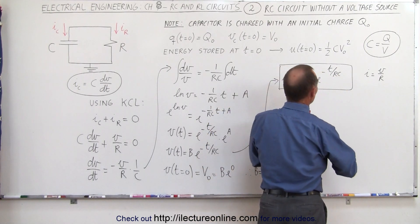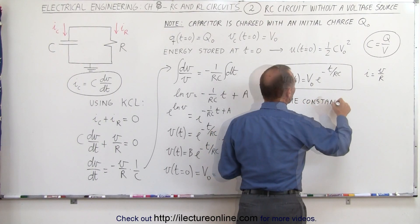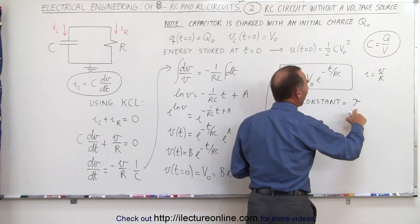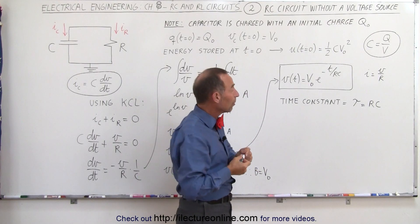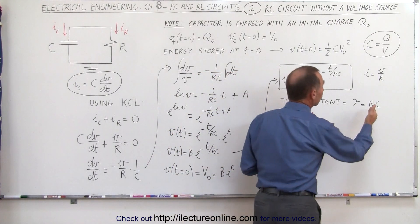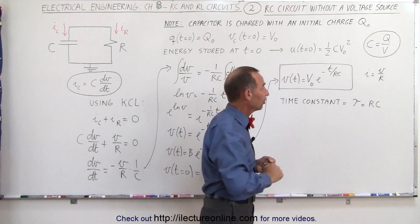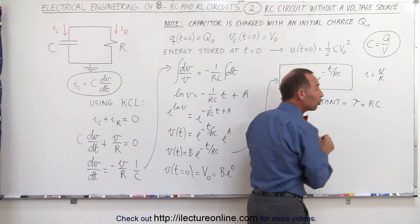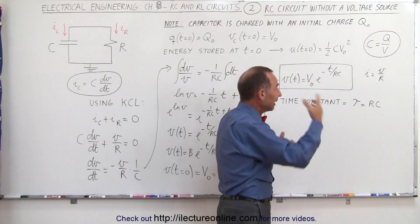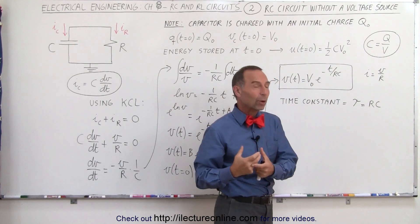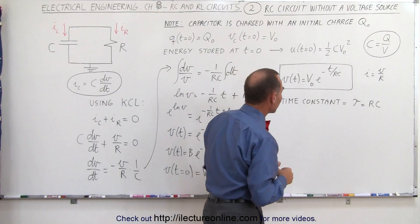We call that the time constant, and we use the Greek letter tau. The time constant tau is equal to R times C. If tau is a large number — meaning a large resistance or large capacitance — it will take a long time for the voltage to go to zero. If tau is small, it will go much quicker. If the resistance is very small, there is not much resistance to current flow and the charge drains very quickly from the capacitor. We'll talk more about the time constant in the upcoming videos.